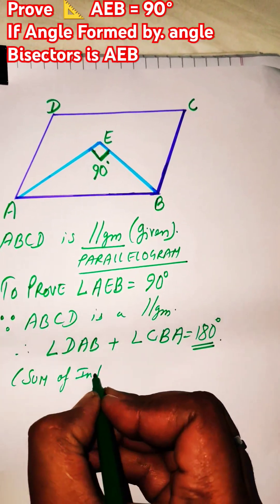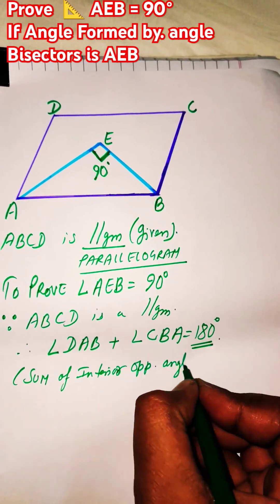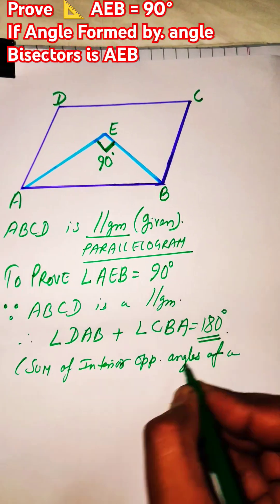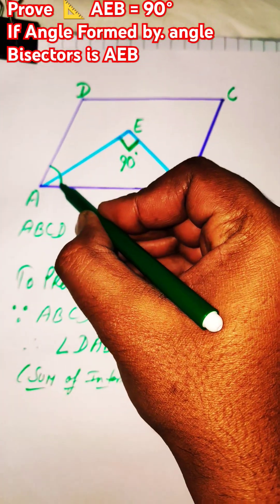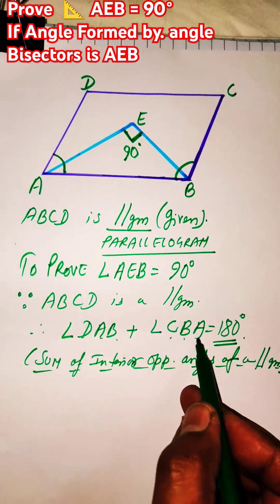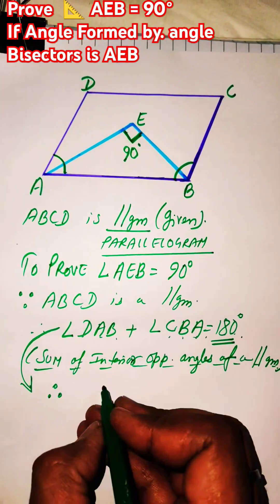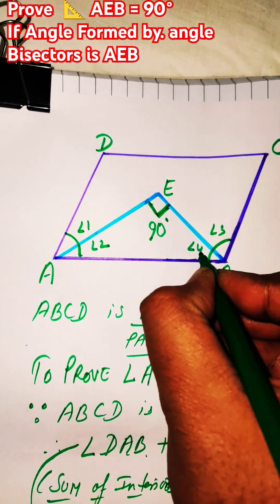We know that for any parallelogram, the sum of interior adjacent angles of a parallelogram is always equal to 180 degrees. So we can say that angle DAB and angle CBA both will add up to give the value of 180.